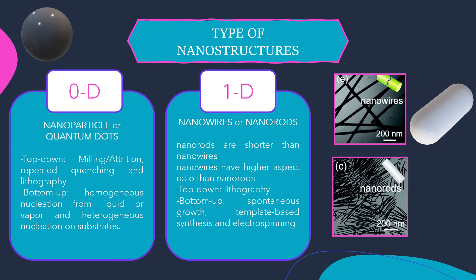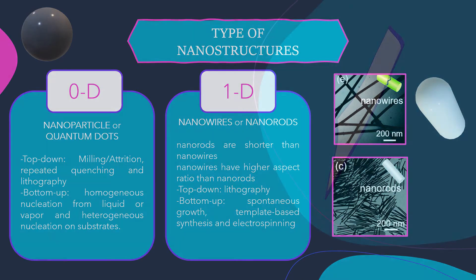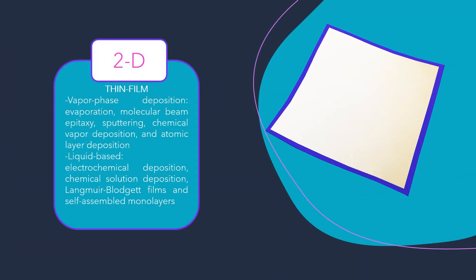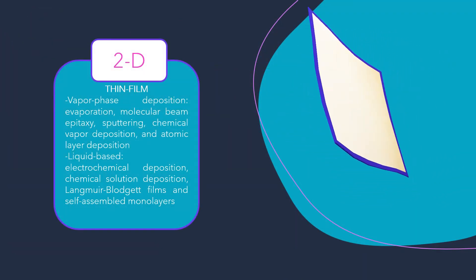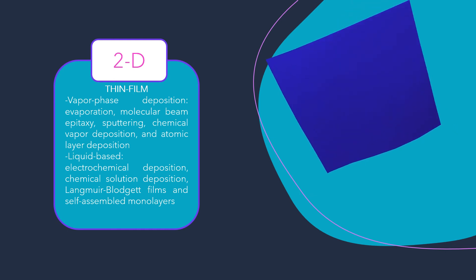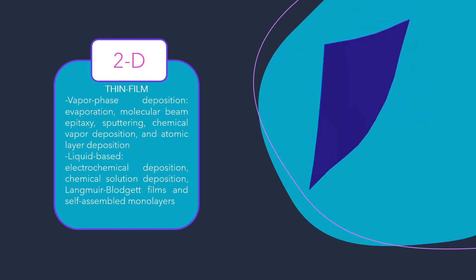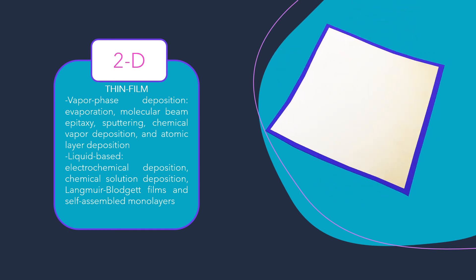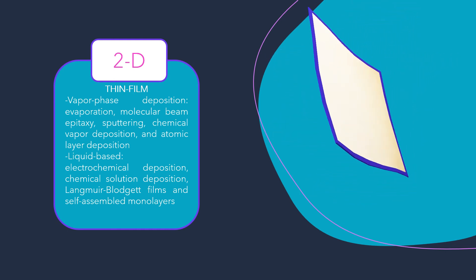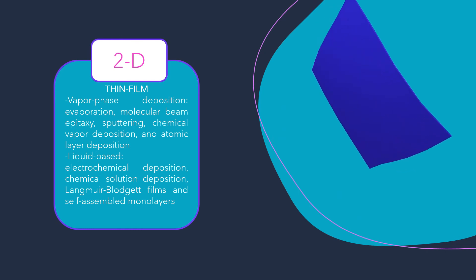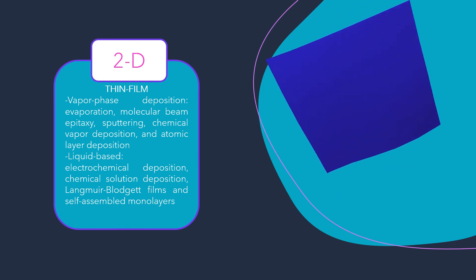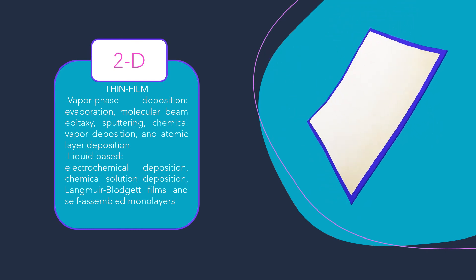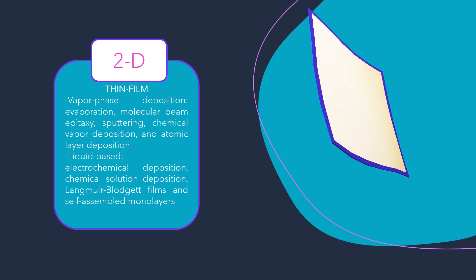Two-dimensional nanostructures are thin films — the most famous example is the graphene sheet. Film growth methods can generally be divided into two groups: vapor phase deposition and liquid-based growth. An example of vapor phase deposition is molecular beam epitaxy; other examples can be read in the slide.